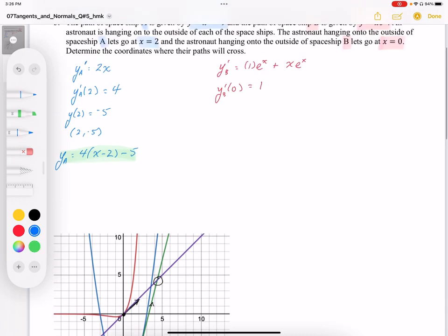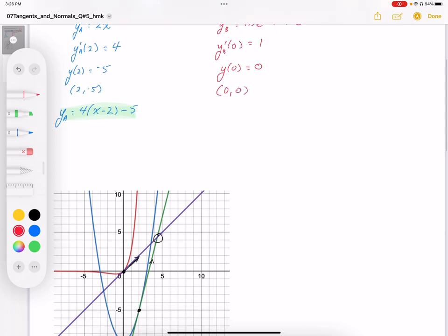And then for the other function, I've got the slope. I need to find the y coordinate at 0 when I plug in 0 to the original function. I get 0. So the coordinate is going to be at 0, 0, which we can see right at the origin. Now I can write the equation of the tangent line because I have the slope, which is 1, and the coordinate. So this just simplifies to y equals x.